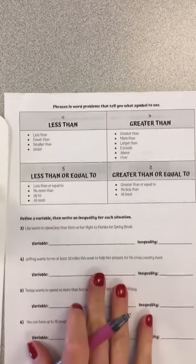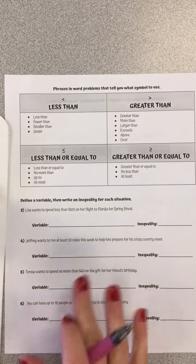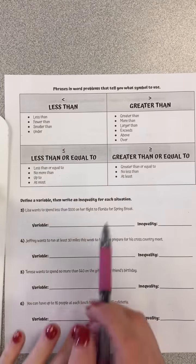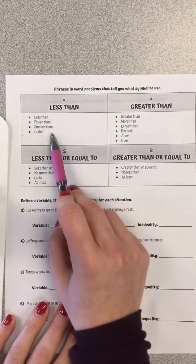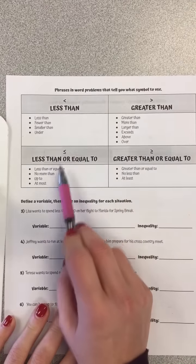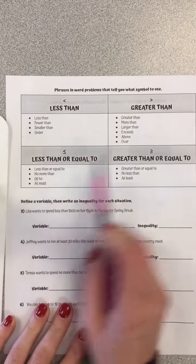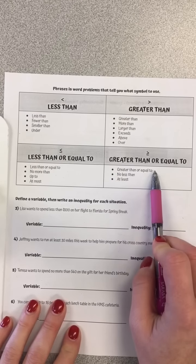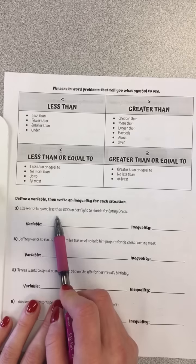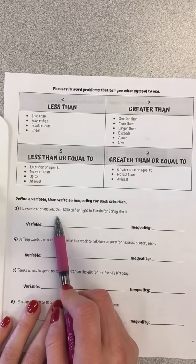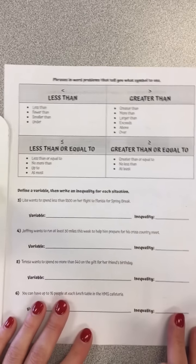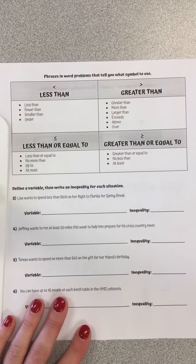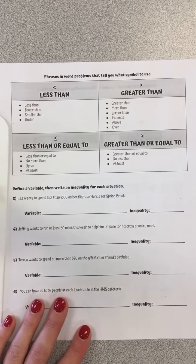If you flip it over, we're going to look at some phrases and word problems that tell you what symbol to use. We have keywords for less than, less than or equal to, greater than, and greater than or equal to. We're going to define the variable and then write an inequality for each situation, referring back to those keywords to help us determine what sign to use.